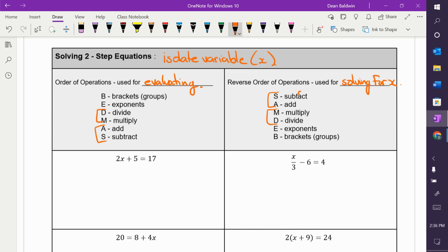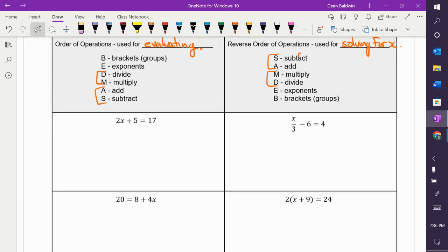The brackets and exponent stuff, depending on how you want to solve something, I'll show you, you can do it two different ways. Okay. So, we look at this first question. 2x plus 5 is equal to 17.